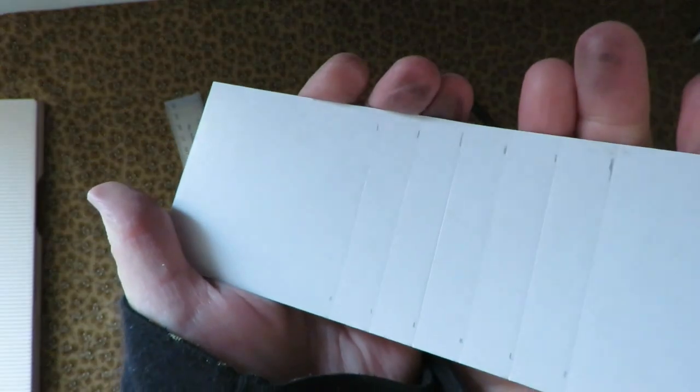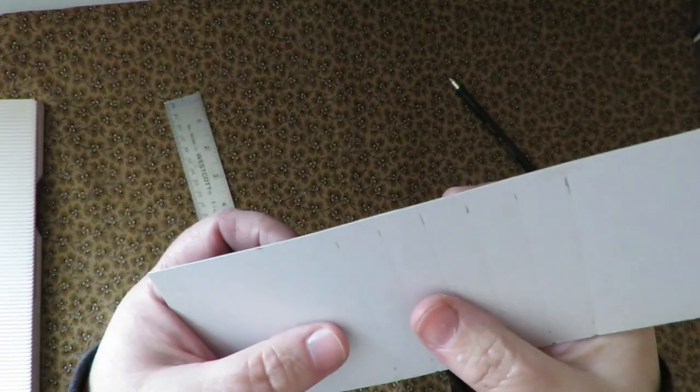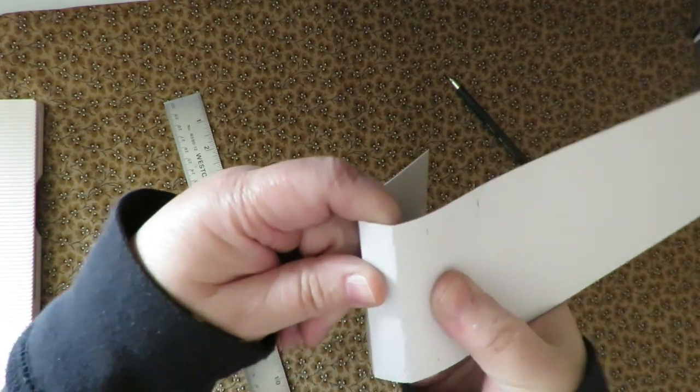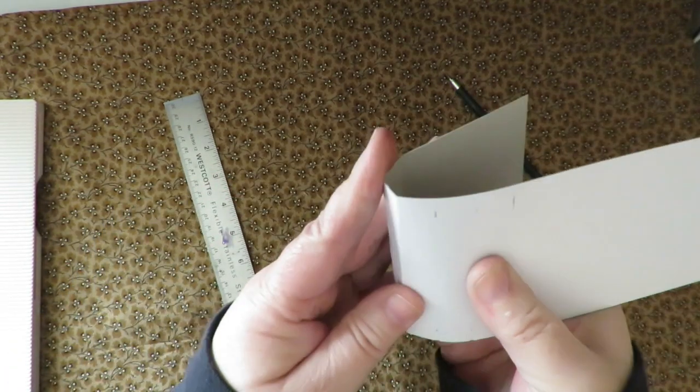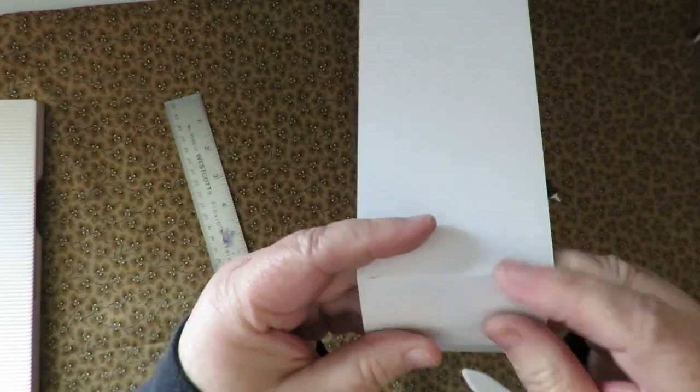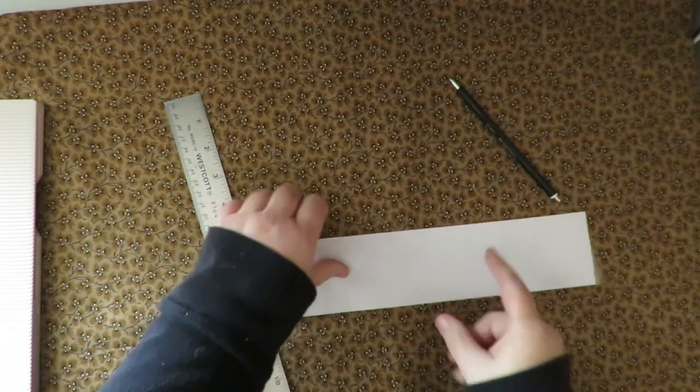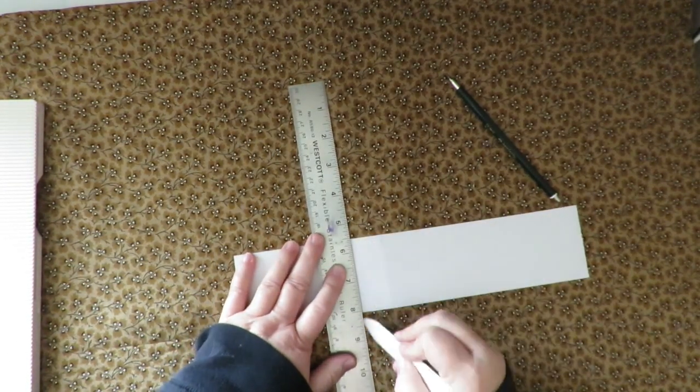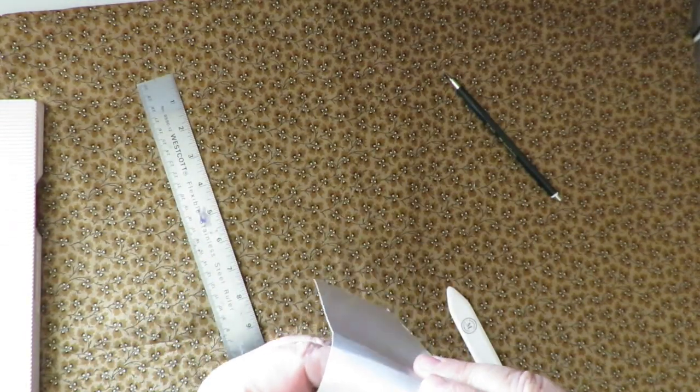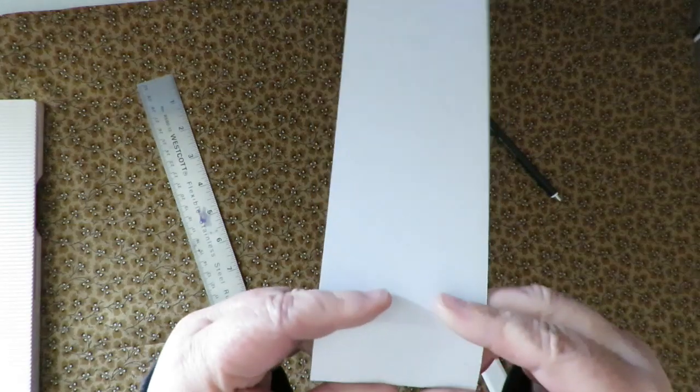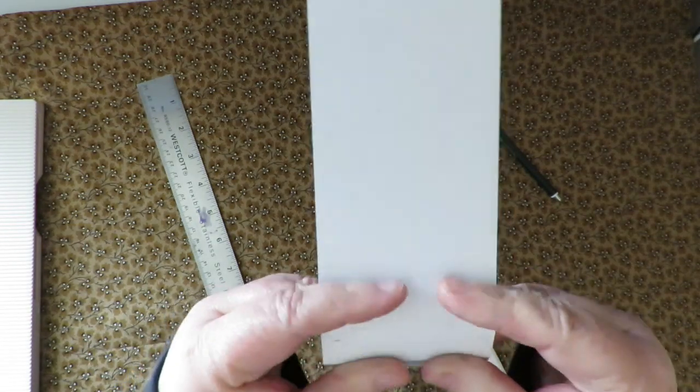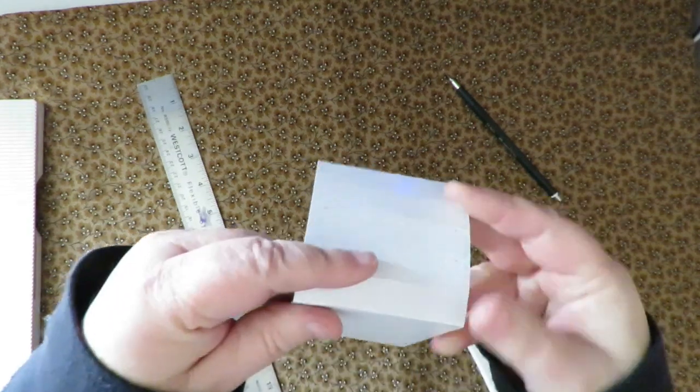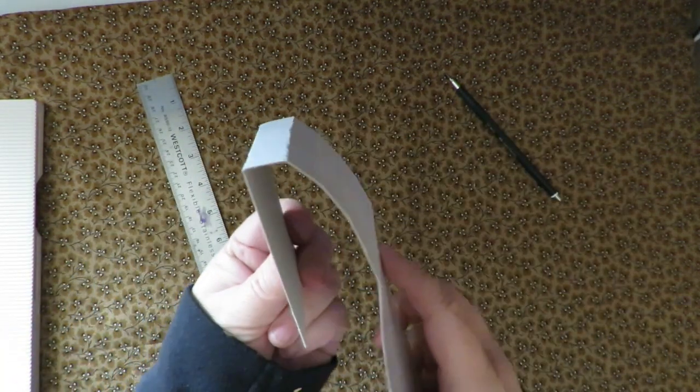Then you're going to take it and you're going to fold it. You're going to fold it backwards at each place that you scored. So you're going to just take it and bend it, fold it backwards. I had a spot there that needed to be scored a second time. And this is what you end up with.